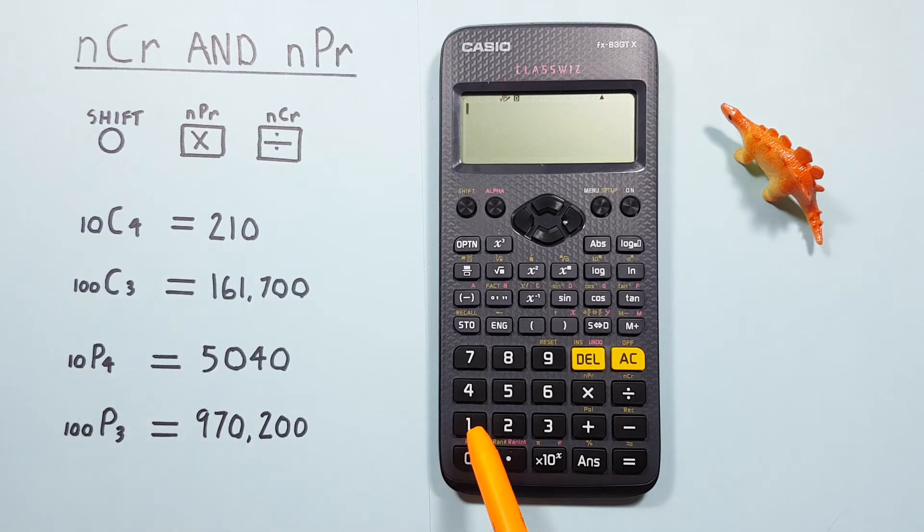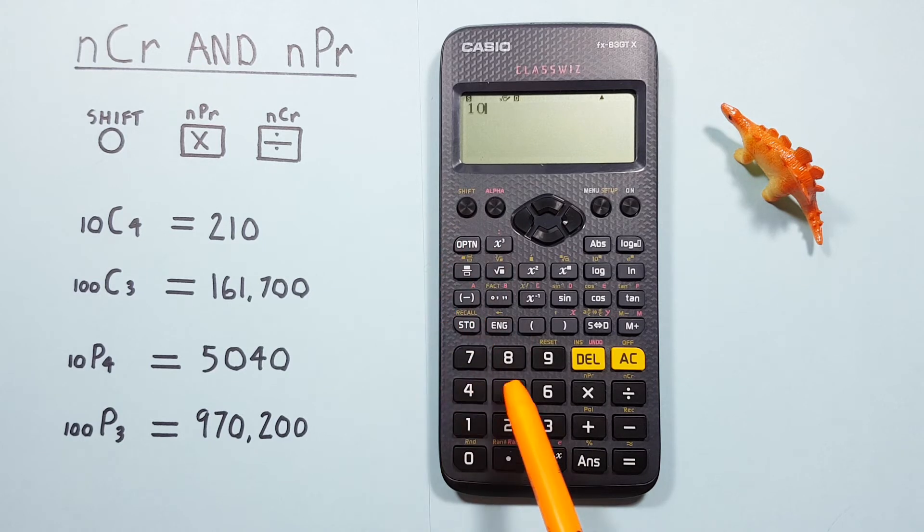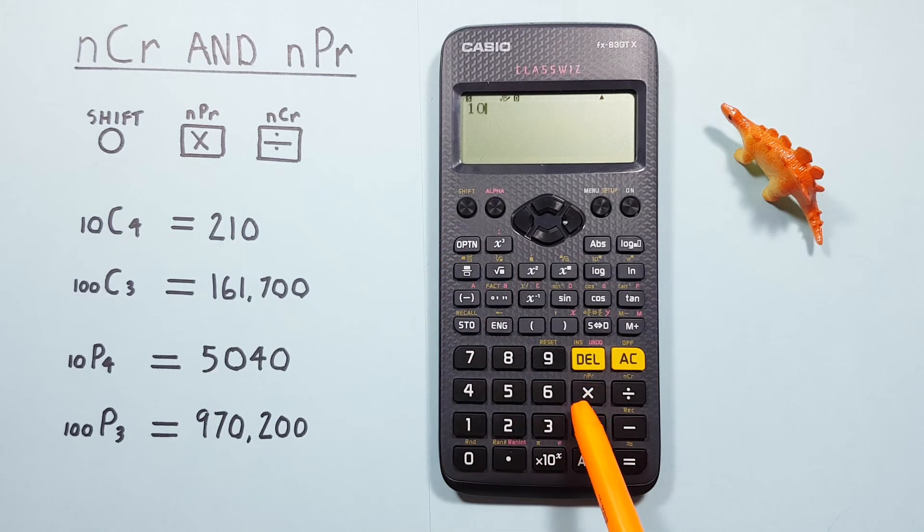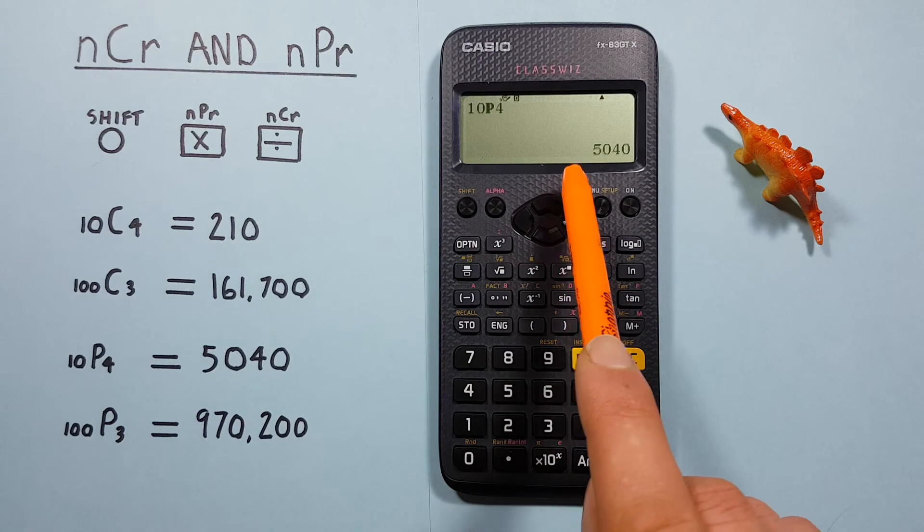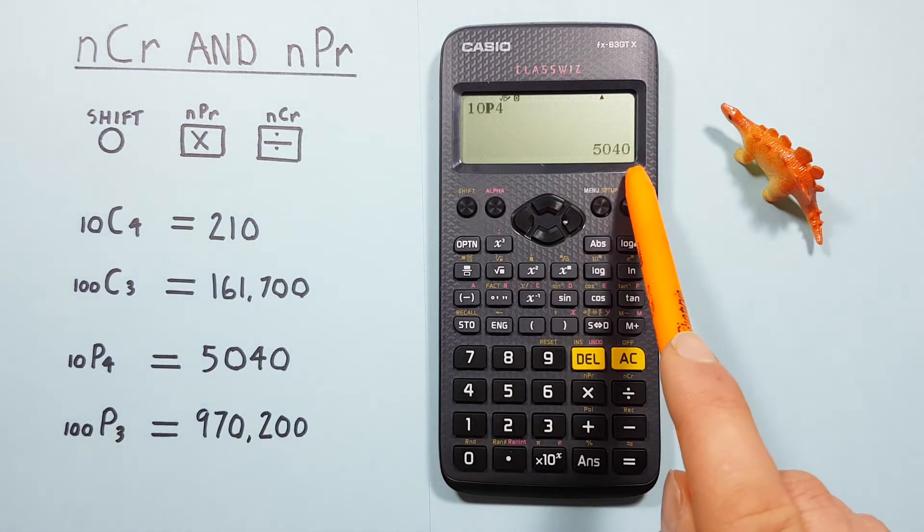we start by entering the 10, and then the shift, then the multiplication key with the shift function of permutation, and then the 4, and we can press equals, and see we get a result of 10 choose 4 permutations is equal to 5,040.